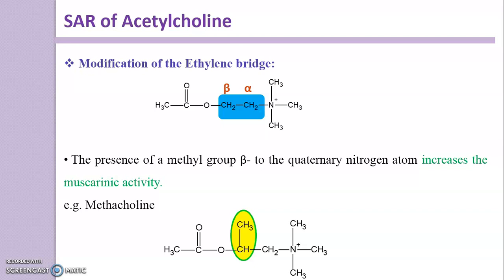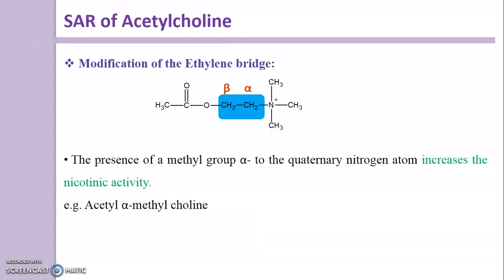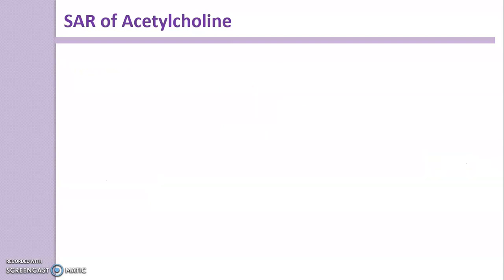The presence of a methyl group alpha to the quaternary nitrogen atom increases the nicotinic activity — example is acetyl alpha-methylcholine. In summary: replacing beta-hydrogen with methyl gives selectivity towards the muscarinic receptor, while replacing alpha-hydrogen with methyl gives selectivity towards the nicotinic receptor.